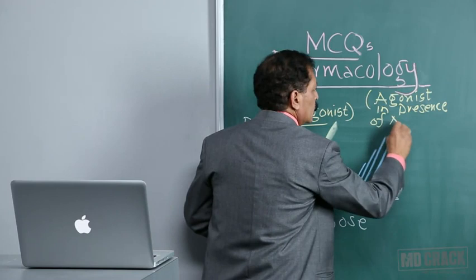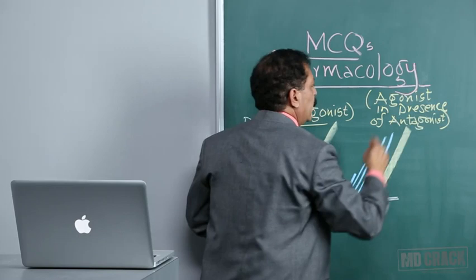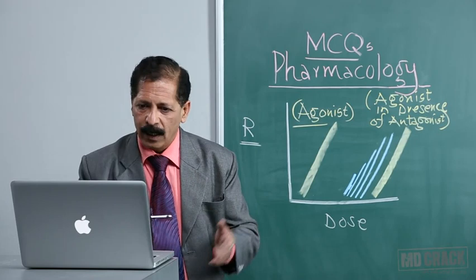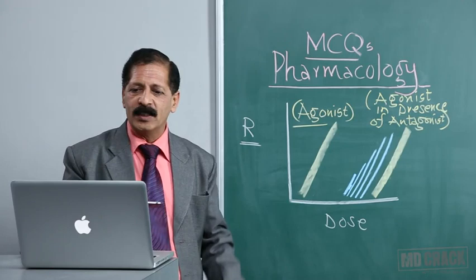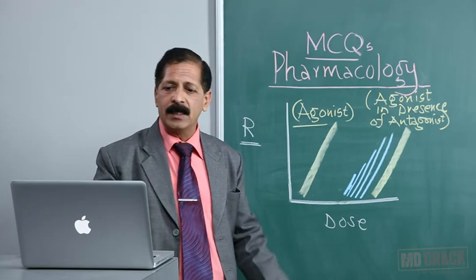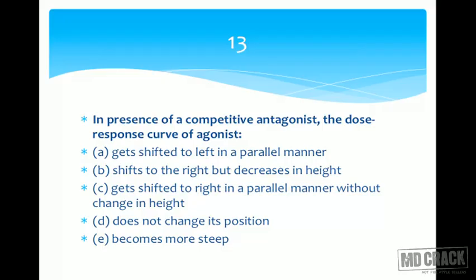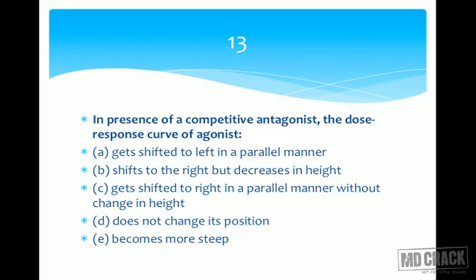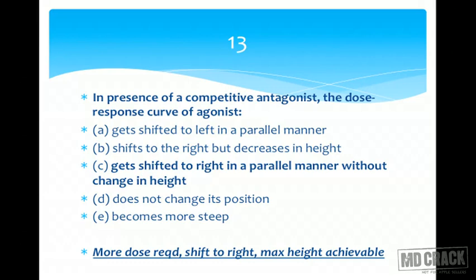This is why we call this reversible antagonism — you can fully reverse the effect of the antagonist. Checking the options: shifted to the left — not possible. Shifted to the right but decreases in height — no, the height is the same. Shifted to the right in a parallel manner without changing the height — yes, that's the answer. The other options about position unchanged or becoming more steep are obviously wrong.